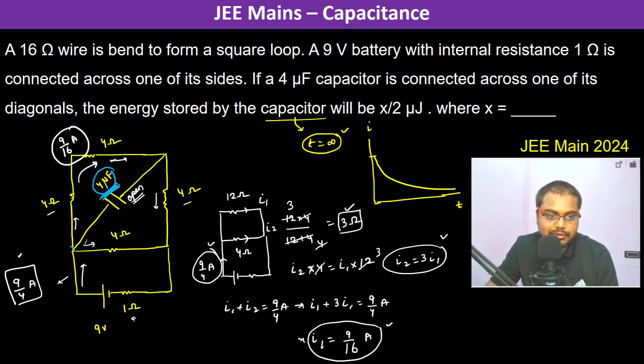So therefore V is going to be equal to 9 by 16 into 8, which is 9 by 2 volts. This is going to be the potential difference.